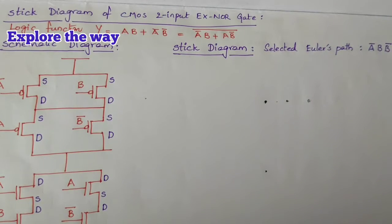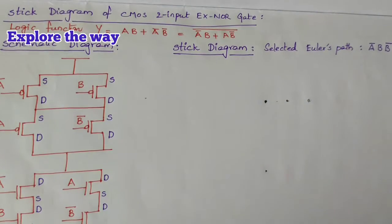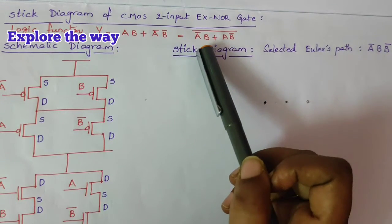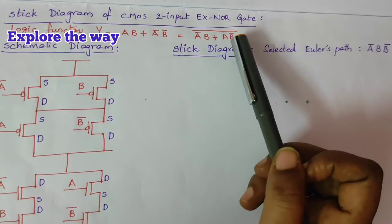Stick diagram of CMOS 2 input X-NOR gate. The logic function is y equal to ab plus a bar b bar which is equal to ab bar whole bar.